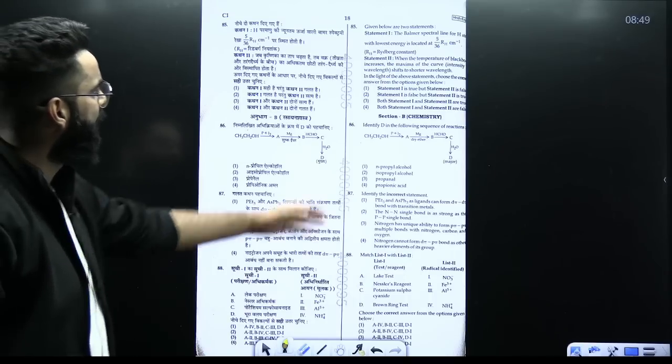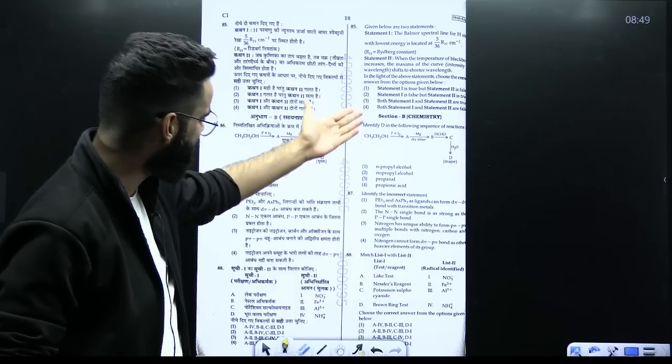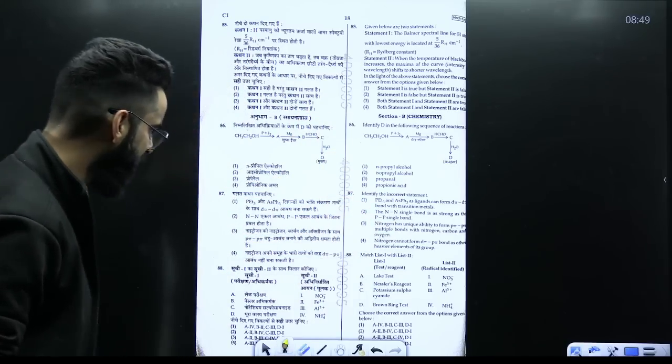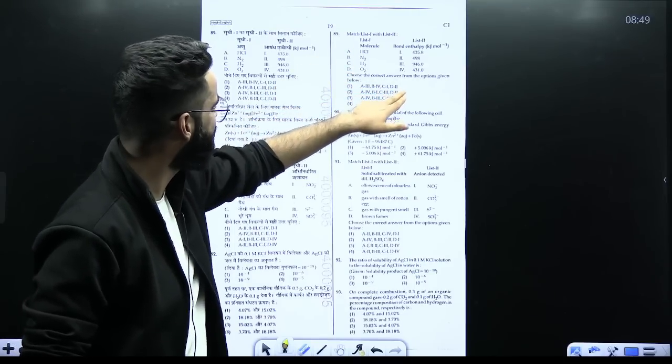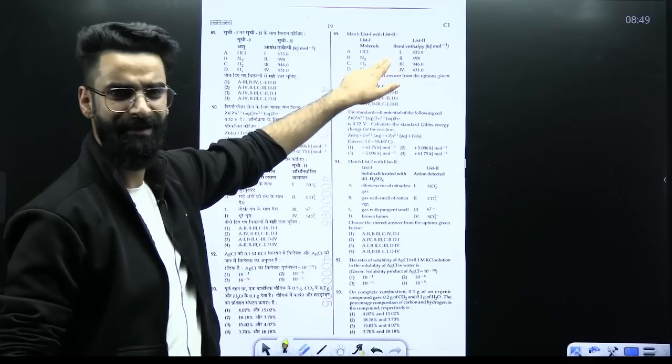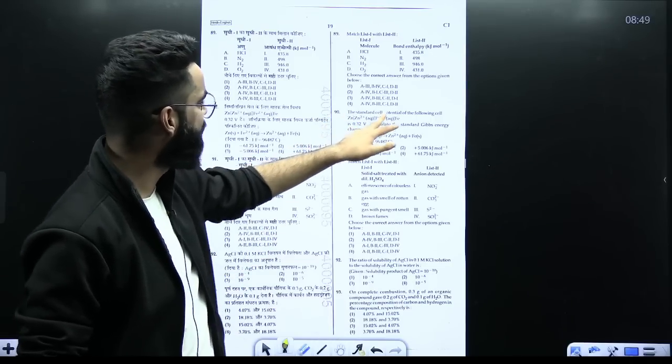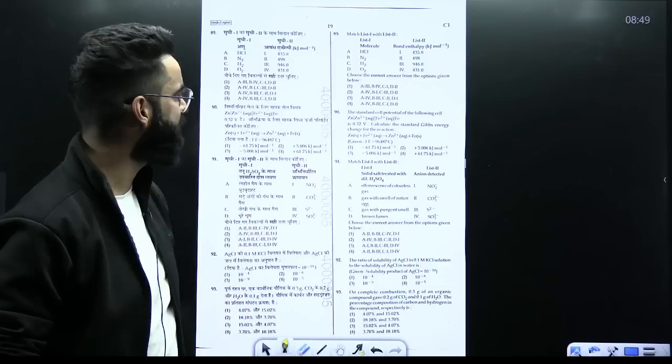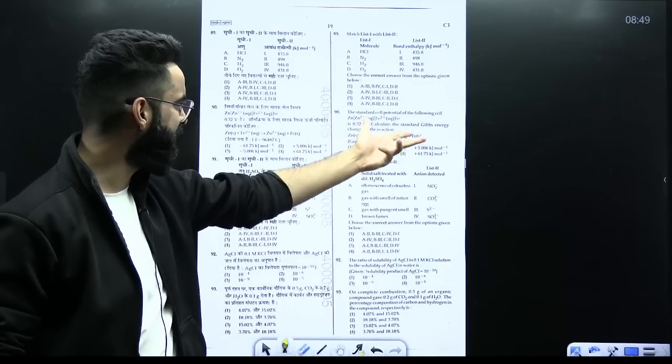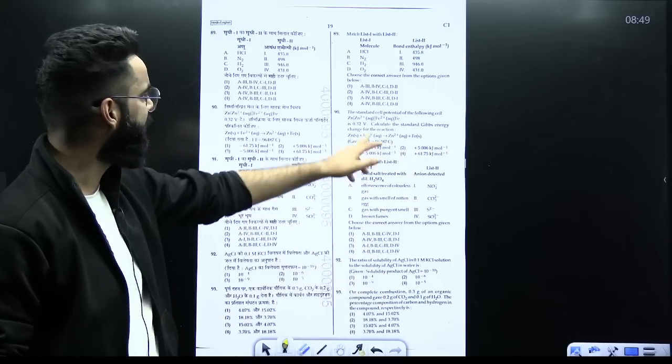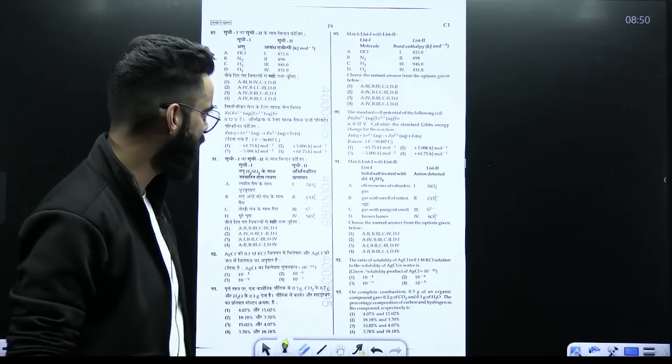Similarly, if you look at the other questions. A question based on the Balmer series. Simple question only. And similarly guys, again the convergence question from chemical bonding part. Match the following. A question based on bond strength, is it? Let me check it first. Yes, bond enthalpy. So the question based on bond order basically. More the bond order, more the bond strength, more the bond enthalpy. The standard cell potential of the cell is given. Calculate the standard Gibbs free energy change. So delta G naught you are supposed to calculate minus N F E naught cell. N value for the reaction will be 2. F will be 96,500. And E naught value is given as 0.32. Perfect. Multiply them, divide by 1,000, you get the answer in kilojoules. Again, simple basic question only.